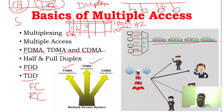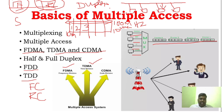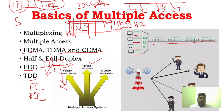Time Division Duplexing: in TDD, there is only one frequency channel, but it is divided into time slots. One part of the time slot is used for forward communication and another part of the same channel is used for reverse communication. So instead of two separate frequency channels like FDD, TDD uses one channel but alternates between forward and reverse transmission using time slots.